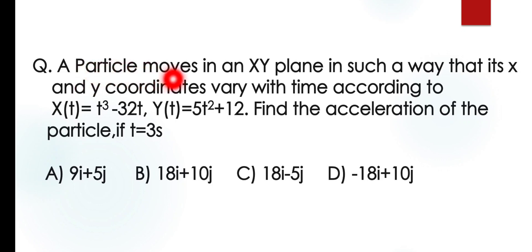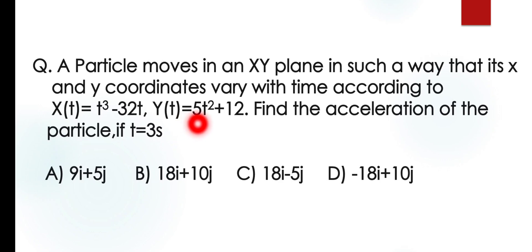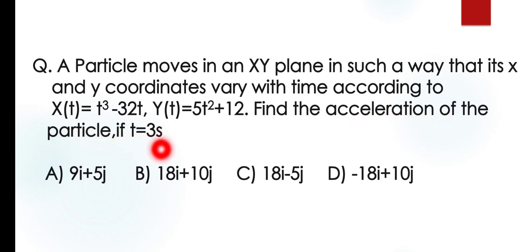A particle moves in an xy plane in such a way that its x and y coordinates vary with time according to x(t) = t³ - 32t and y(t) = 5t² + 12. Find the acceleration of the particle if t = 3 seconds.